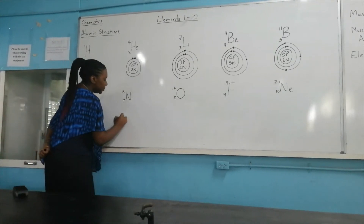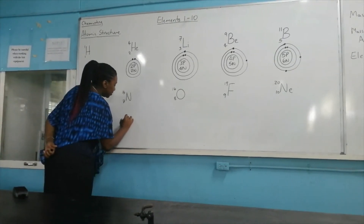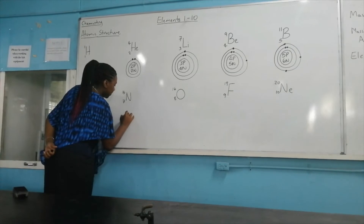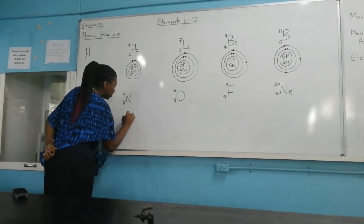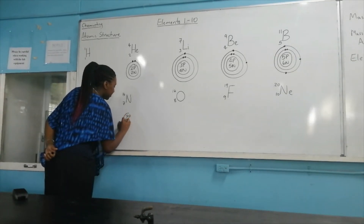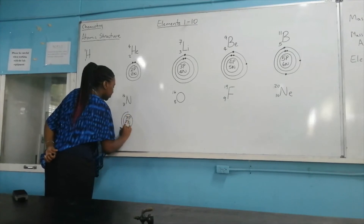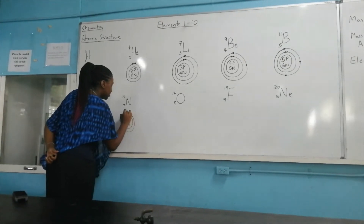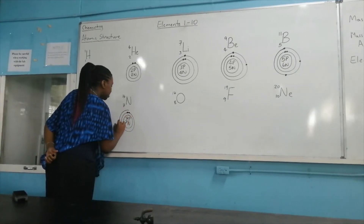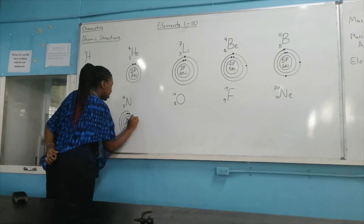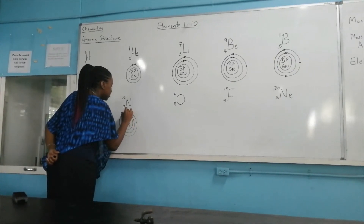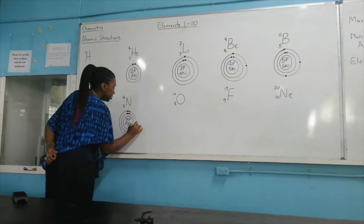Element number 7 is nitrogen — the most abundant gas in the atmosphere. We have seven protons and seven neutrons, two electrons on the first shell, and five electrons on the second shell.